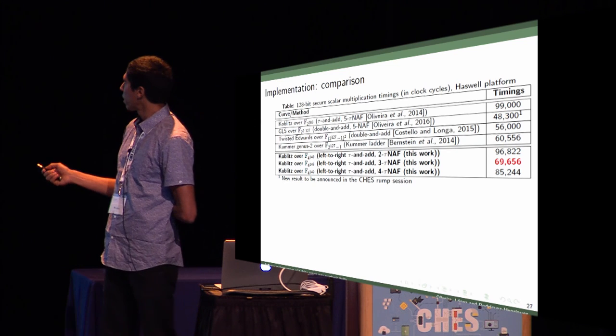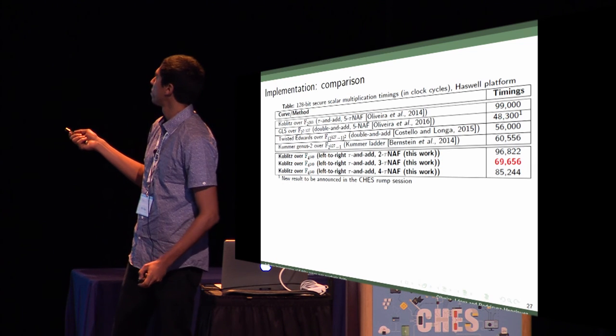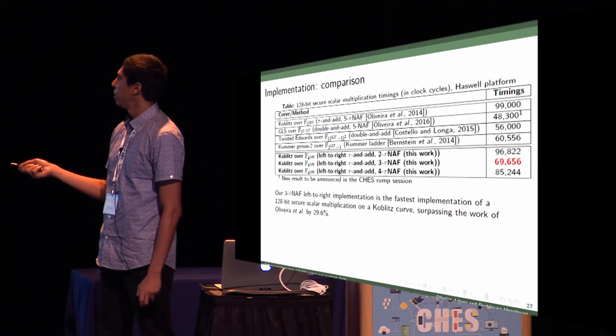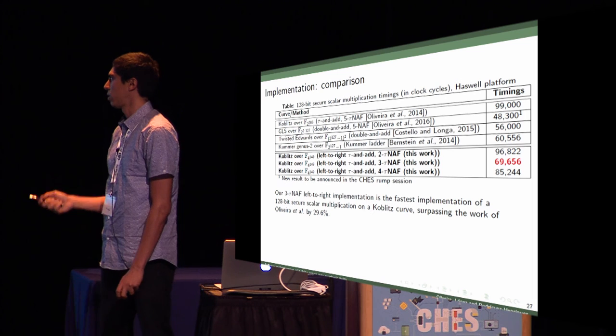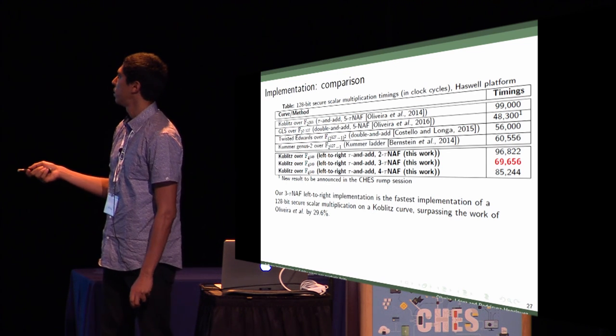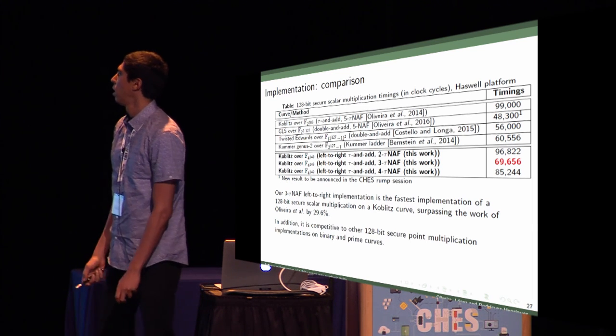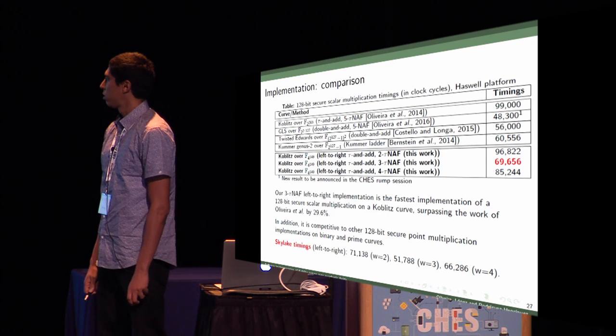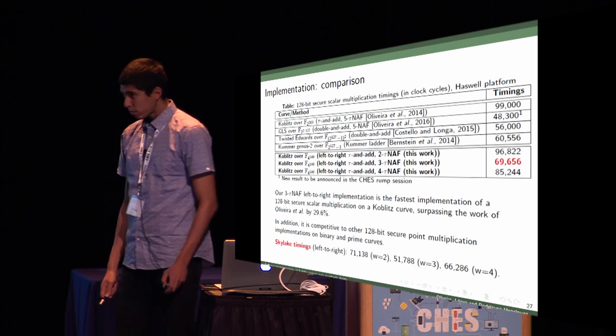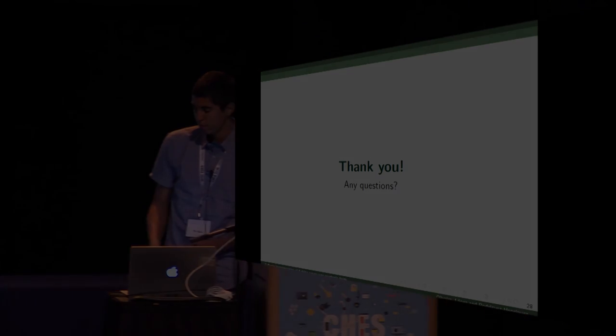This is our results. Here, our state-of-the-art implementation with width 3. Our implementations are the fastest in Koblitz curves. We surpassed almost 30% of the previous state-of-the-art work, and it's very competitive to other 128-bit secure multiplications on binary and prime curves. In Skylake, our state-of-the-art was about 52,000 clock cycles. That's it. Thank you very much.